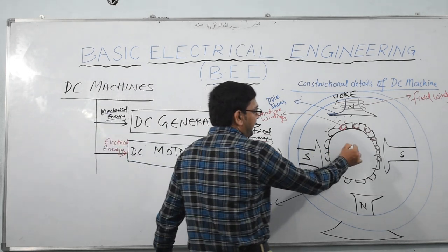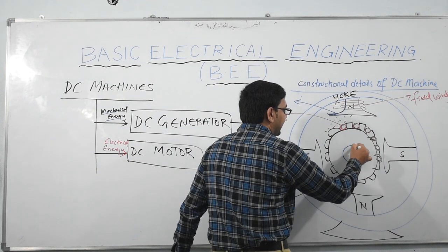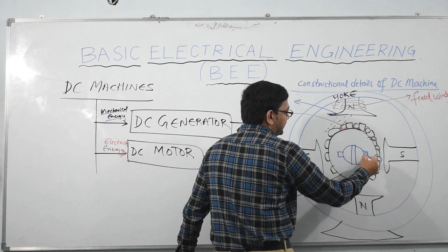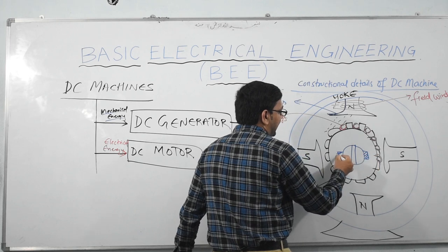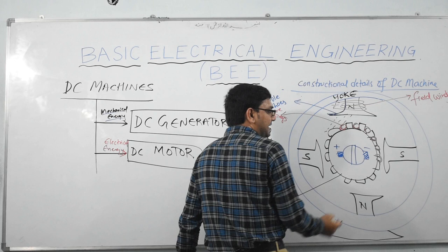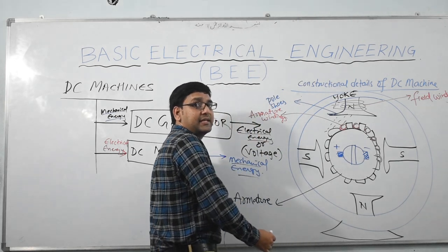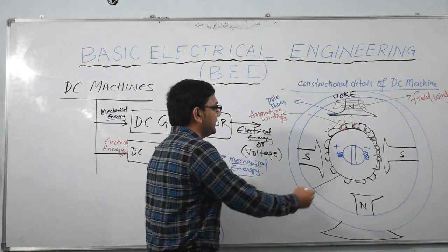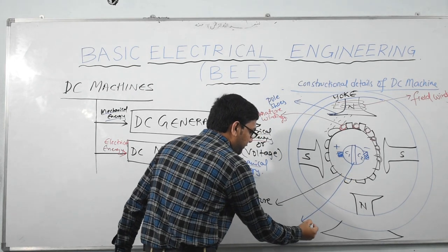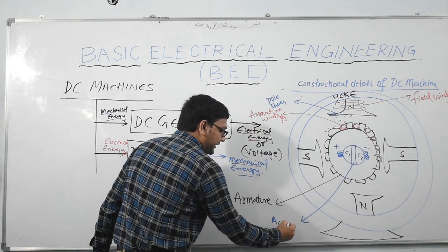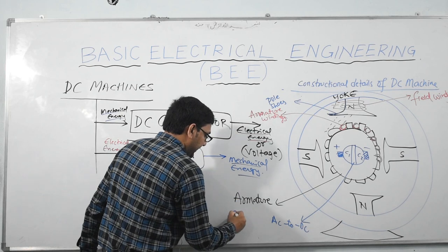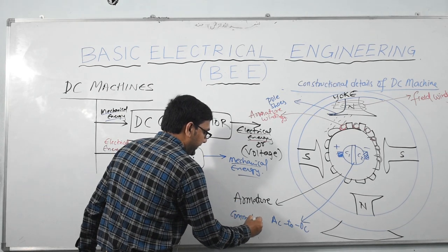The machine also has one important component called the commutator with two brushes. These two brushes are made of carbon material and have polarity plus and minus. The commutator has two segments, C1 and C2, and it is used to convert the produced AC voltage to DC voltage.